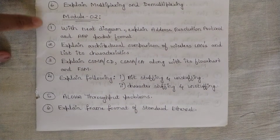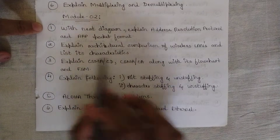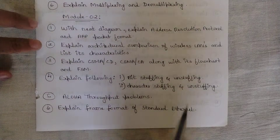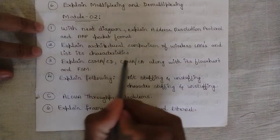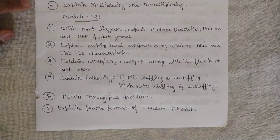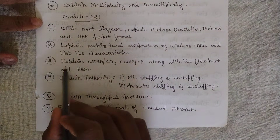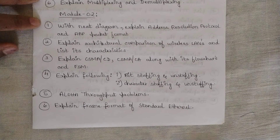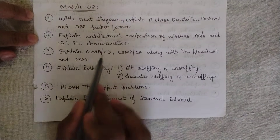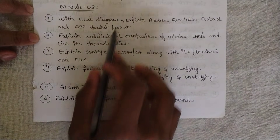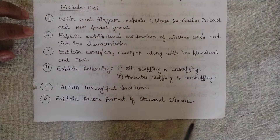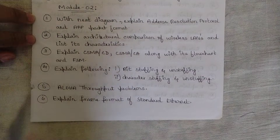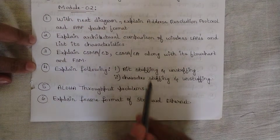The third question is sure — one question will definitely be asked: either CSMA/CD or CSMA/CA. I've covered both in one of my videos. You need to explain CSMA/CD or CSMA/CA along with its flowchart and Finite State Model (FSM). Please give priority to this question first when studying Module 2. It is a bit tricky because of the FSM model and flowchart — go refer to those notes and study this first. This is a fixed question from Module 2.